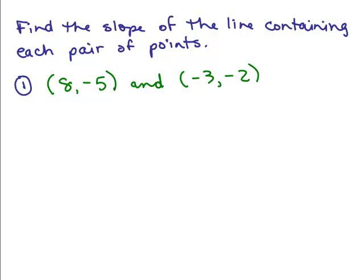So here's the first problem. Find the slope of the line containing the points 8, negative 5 and negative 3, negative 2. All right, so what we're going to do is start out with the formula for slope. M equals, you do the fraction bar.